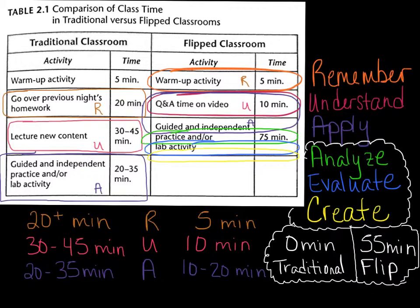From there, we move into a lecture on new content, which in a 90-minute class takes up almost half the class — that's where students are asked to simply understand. Then the guided and independent practice or lab activity is where they apply, and a good portion of this happens outside of class. So in the traditional classroom model, about 20 minutes is spent on remembering, 30 to 45 minutes on understanding, and the remaining 20 to 35 minutes on application — leaving really no time for analysis, evaluation, or creation.